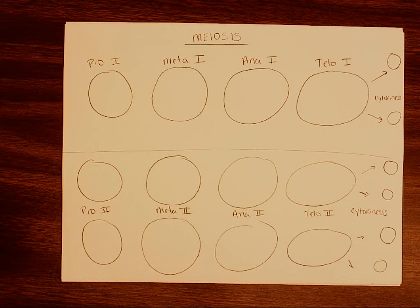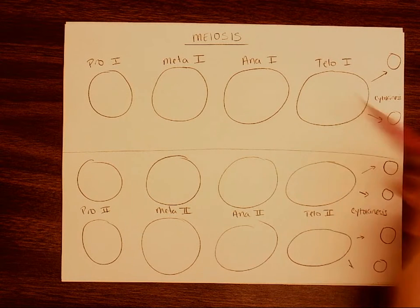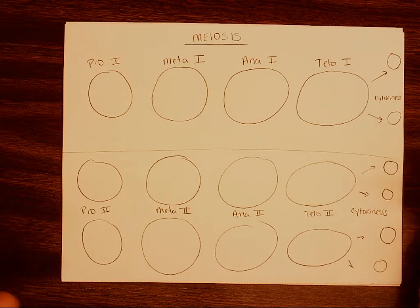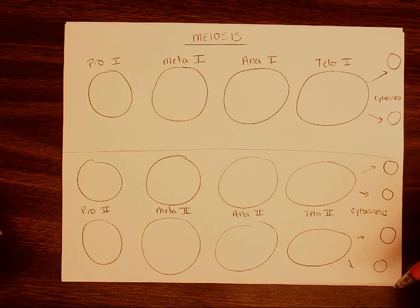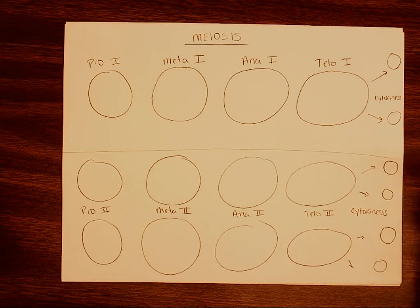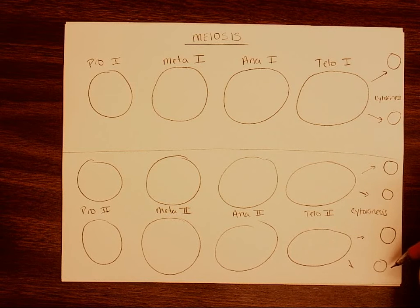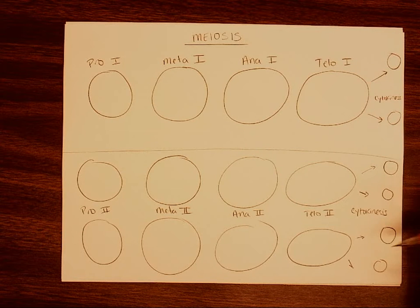Meiosis is going to look very similar to mitosis in that we're going to see the same phases — PMAT — in the same order, and we're going to see some very similar things happening inside of these cells. But the two main differences are that with mitosis there's only going to be one division, whereas in meiosis there are going to be two divisions, which results in four daughter cells that are all going to be unique. With mitosis, one division gives us only two cells and they're going to be identical.